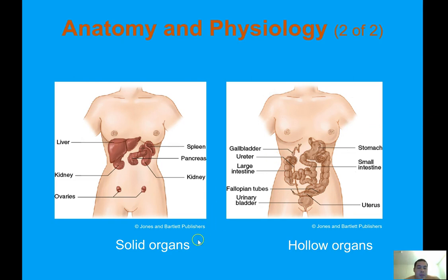Your solid organs include the liver, kidney, ovaries, spleen, and pancreas. Your hollow organs include the gallbladder, ureters, large intestines, fallopian tubes, urinary bladder, small intestines, and stomach.